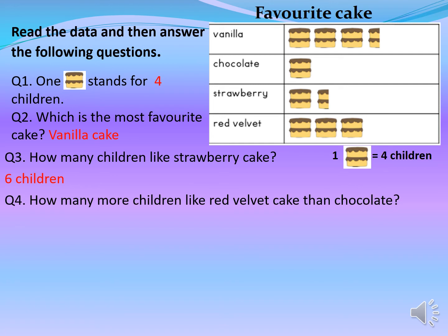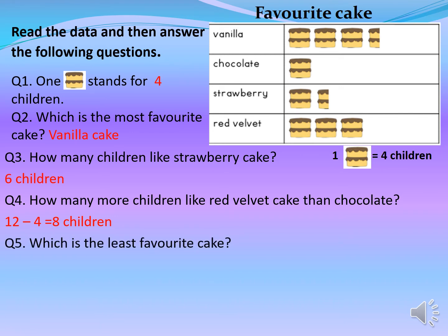How many more children like red velvet cake than chocolate? Since we are comparing, we do subtraction. Red velvet has three pictures: three times four equals twelve. Chocolate has only one picture, so that means four. Twelve minus four equals eight children. Which is the least favorite cake? We can find out that chocolate is the least favorite cake.